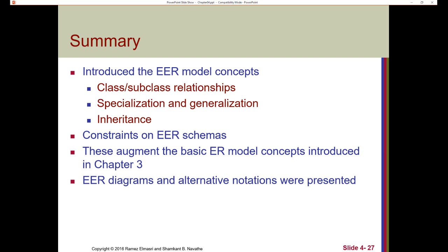In this video, we introduced the enhanced entity relationship model concepts, including subclass and superclass. We talked about specialization and generalization and how inheritance works, and the different constraints on these types of schemas — whether we have total or partial and whether we have overlapping or disjoint. These concepts augment the entity relationship model from chapter three. I encourage you to check out the video that shows the notation we'll use in Lucid chart for these types of models.